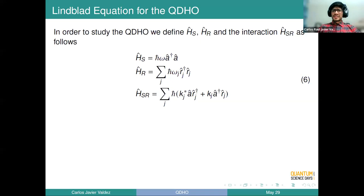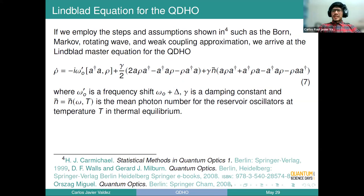It's important to notice that in the H_SR equation we are already using the rotating wave approximation. In this approach we have to employ many assumptions and approximations to preserve the evolution and guarantee that the dynamics will always be positive. In equation seven, the first term describes the usual evolution of a closed system — the quantum harmonic oscillator. The second term describes the dissipation of energy, and the third term gives us the thermal contributions fed from the environment into the system of interest.